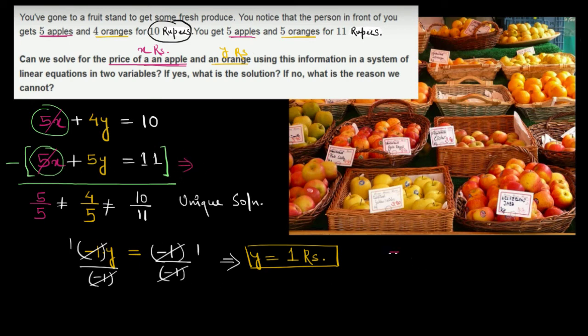5 times x plus 5 times y, substituting y equals 1, gives us 5x plus 5 equals 11.